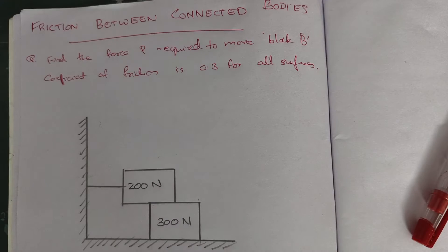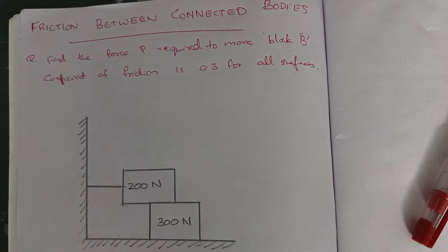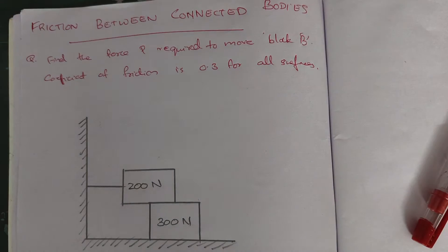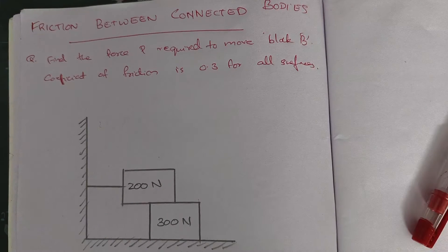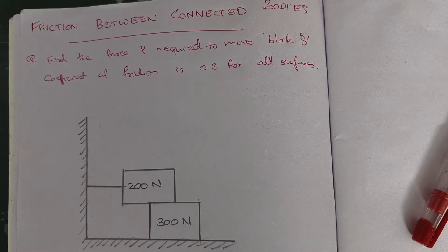Hi friends, welcome back. We covered the friction between connected bodies problems. The question is: find the force P required to move block B. The coefficient of friction is 0.3 for all surfaces.